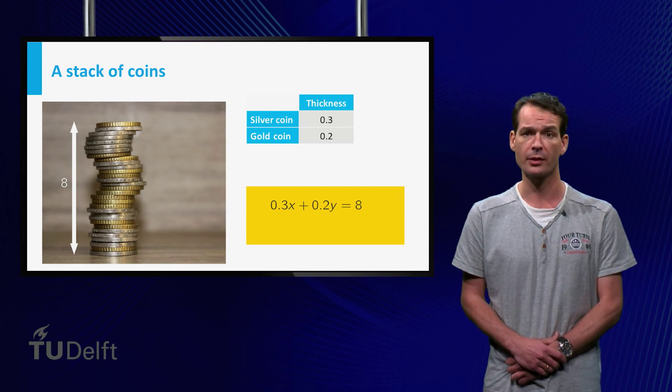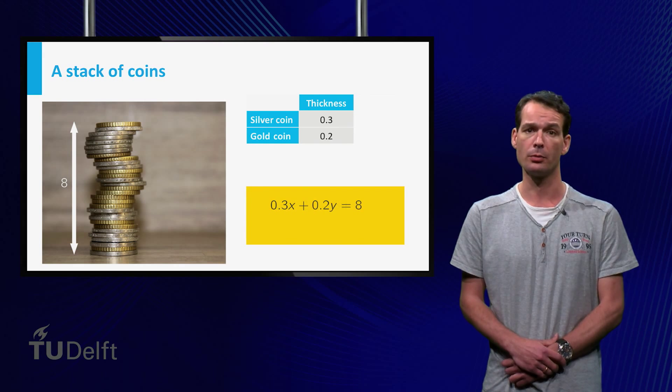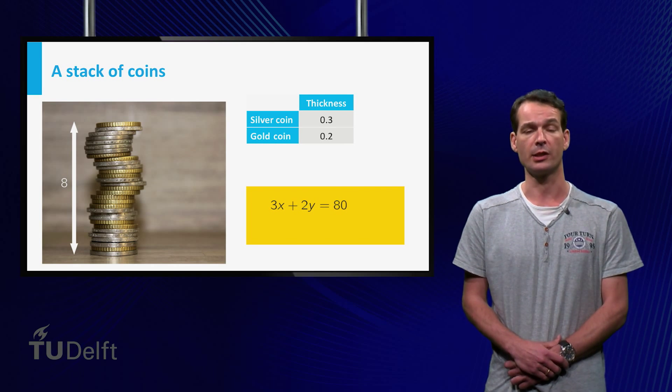To make the equation look nicer, we multiply it by 10, so 3x plus 2y is equal to 80.